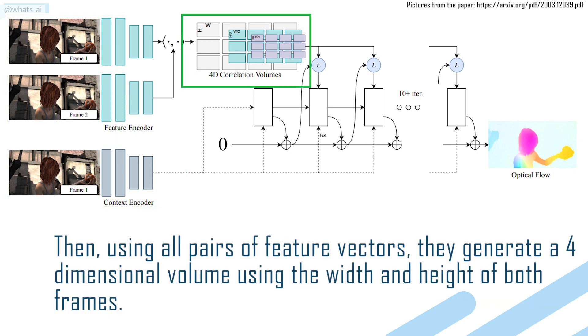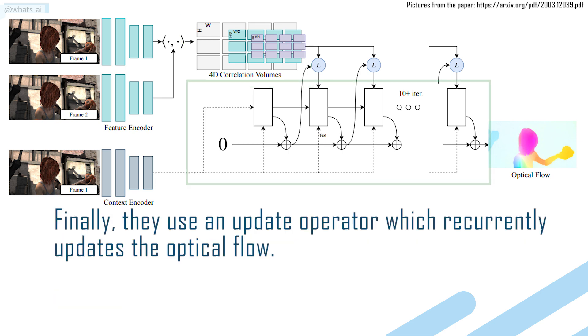Then, using all pairs of feature vectors to generate a four-dimensional volume, using the width and height of both frames.